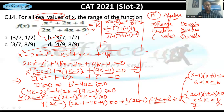Substituting x = −1: numerator = (−1)²+2(−1)+4 = 1−2+4 = 3; denominator = 2(1)+4(−1)+9 = 2−4+9 = 7. So the minimum value of f(x) is 3/7. This eliminates options that don't include 3/7 — so we can reject options A and I.